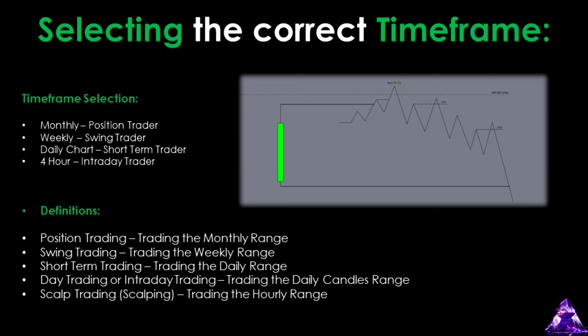The daily chart is one of the best time frames for intraday and short-term traders. As an intraday trader, your goal is to trade within the range of the daily candle and position yourself in line with its directional bias and draw on liquidity. Moving on to the 4-hour time frame — this is often used for intraday trading or scalping. Much of your analysis will be conducted on this time frame; you'll identify higher time frame key levels here and align them with CRT on the 4-hour chart. This time frame will become a core part of your strategy.